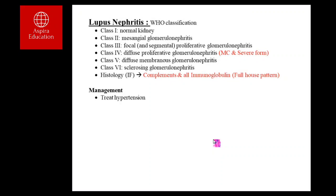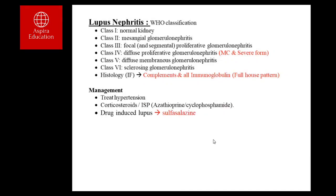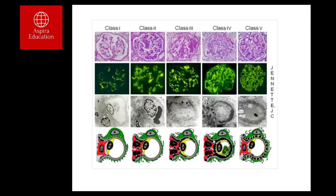Management of lupus nephritis includes non-specific measures such as blood pressure control, and specific measures like immunosuppressive medication — corticosteroids combined with azathioprine or cyclophosphamide. Certain drugs can cause drug-induced lupus, such as sulfasalazine. Drug-induced lupus typically presents with rashes similar to SLE and joint pain; renal, CNS, and peripheral nerve involvement are much less common compared to true SLE.